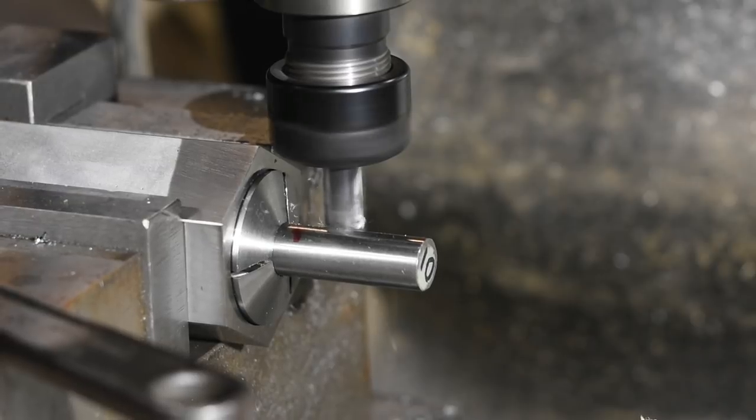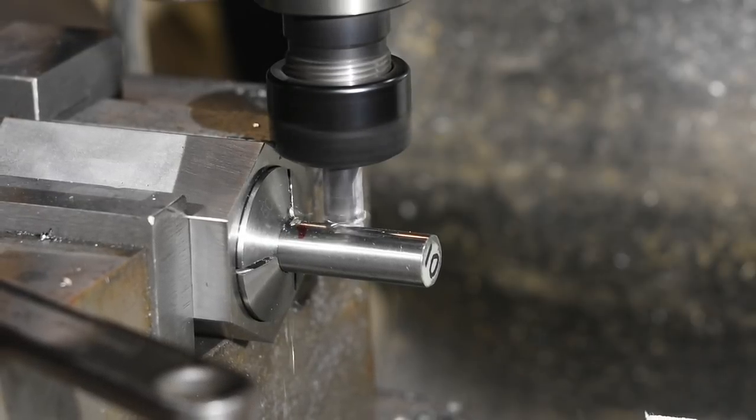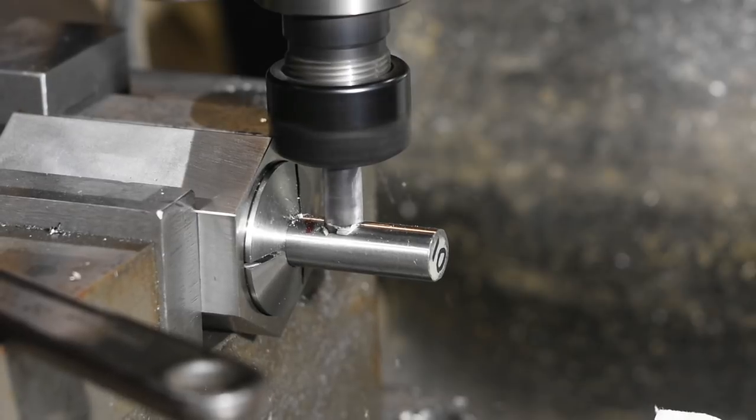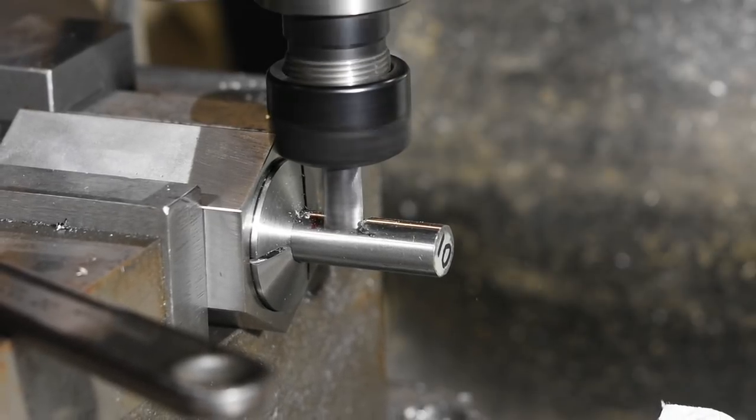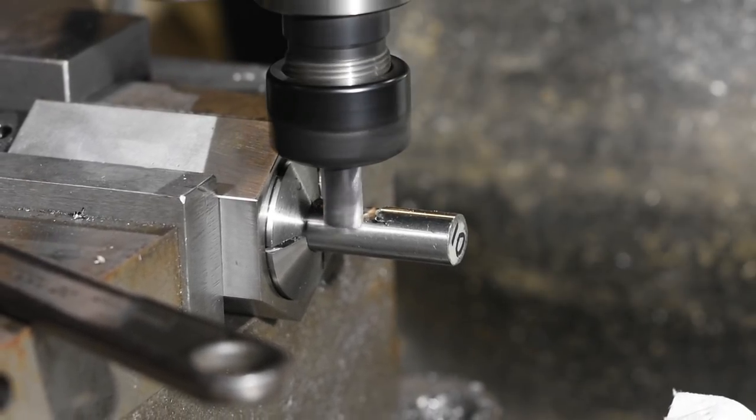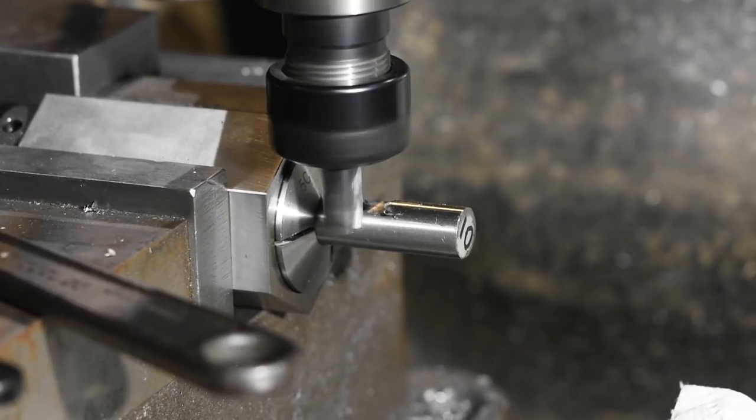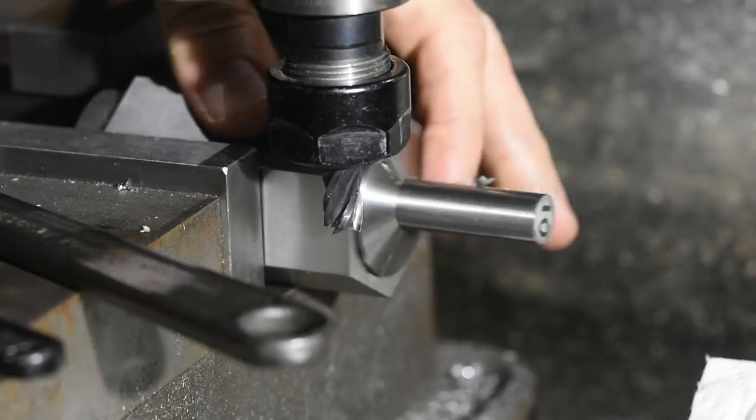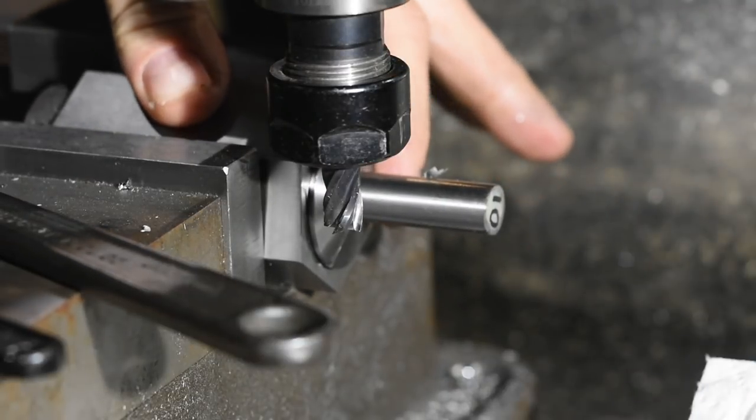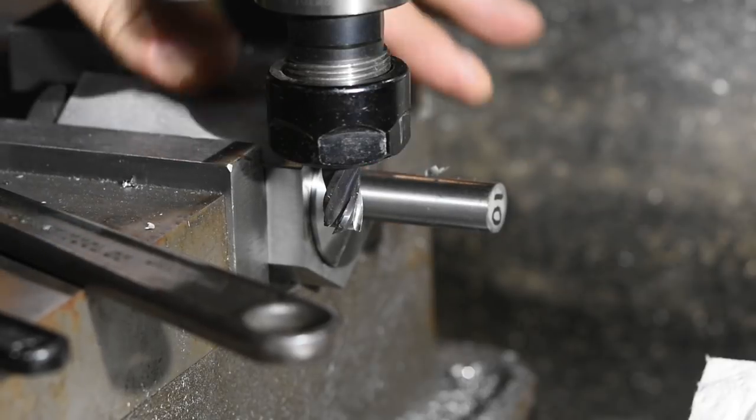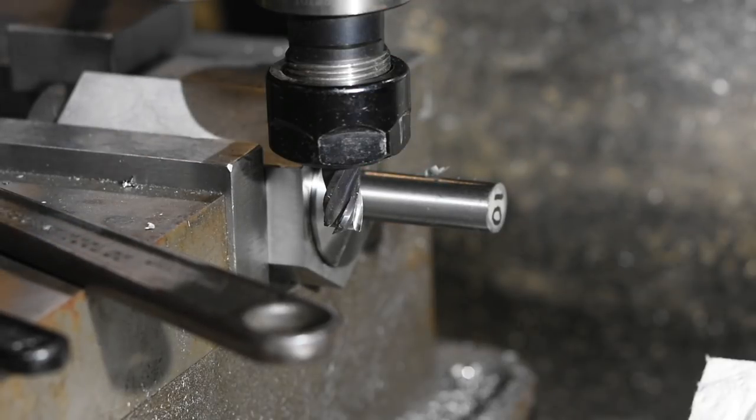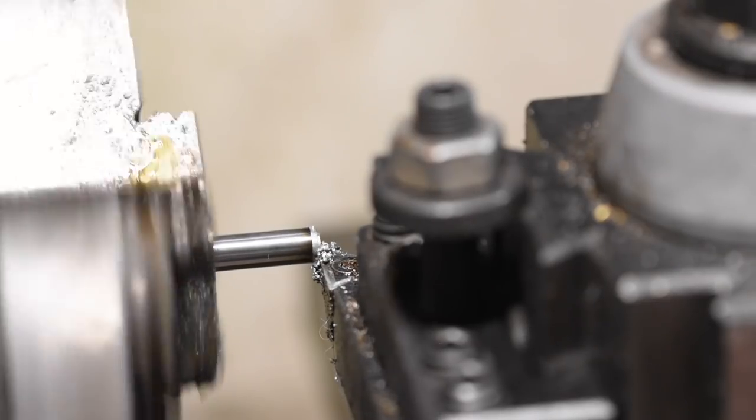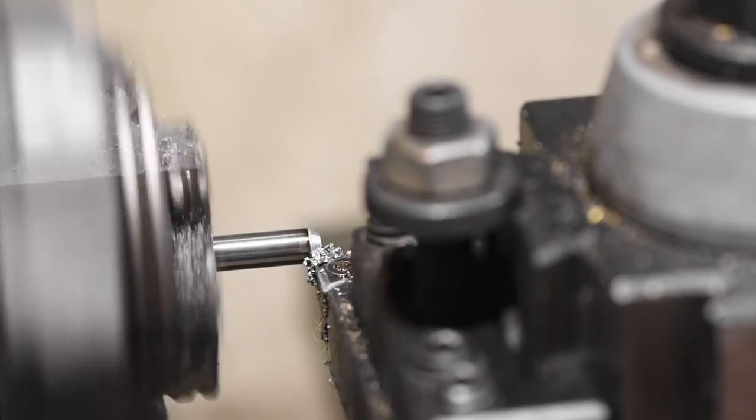By the way, I said 5Cs are for holding round stock. Well, that's not all they do. There are 5Cs for square and hex stock, as well as serrated collets that can grab all kinds of things. There are also what are known as emergency collets that you can kind of customize. So there are a lot of different options when it comes to holding things in 5C collets. If you do a lot of repetitive work on lathes, you can get 5C collet attachments for the headstock that will be much more accurate than 3-jaw chucks, and quicker to set up than 4-jaws.